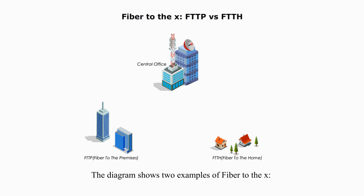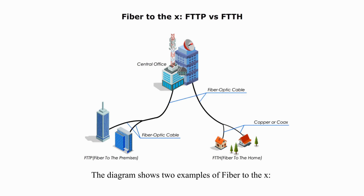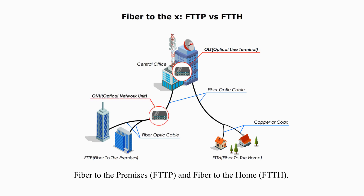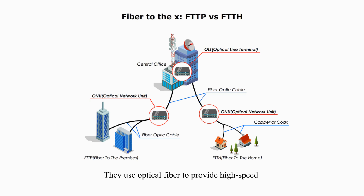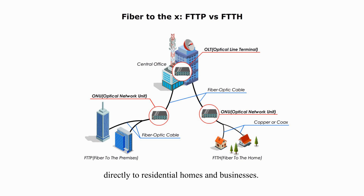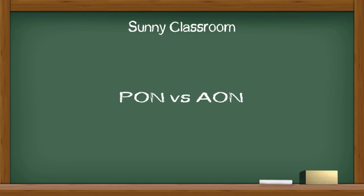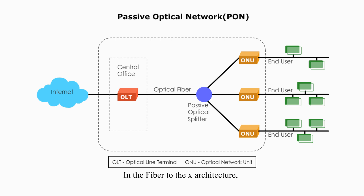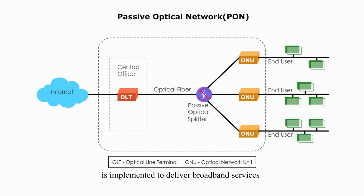The diagram shows two examples of FTTx: fiber-to-the-premises and fiber-to-the-home. They use fiber to provide high-speed internet access from a central office directly to residential homes and businesses. In the FTTx architecture, Passive Optical Network (PON) — a set of standards and protocols — is implemented to deliver broadband services to end users. PON is a shared network with a point-to-multipoint topology.